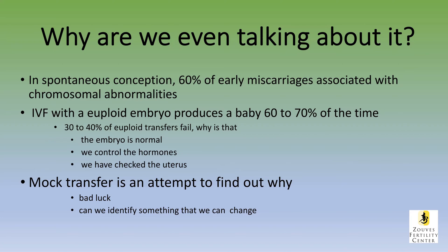So why are we even talking about it? In spontaneous conceptions, 60% of early miscarriages are associated with chromosomal abnormalities in the fetal tissue. When you do IVF and you transfer a euploid or normal embryo, that will usually produce a baby 60 to 70 percent of the time. That means that 30 to 40 percent of euploid transfers fail. So why is that? We know the embryo is normal, we've controlled the hormones, we've checked the uterus. So the mock embryo transfer is an attempt to find out why we fell into this 30 to 40 percent, and we want to find out was this just bad luck or probability, or can we identify something that we can change to get a better outcome for the next transfer?